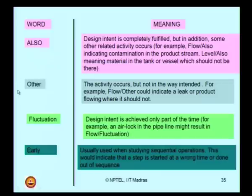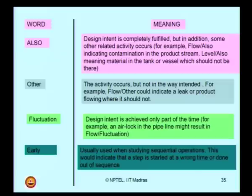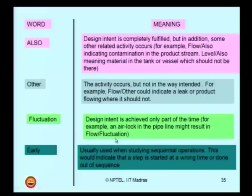There can be a secondary keyword 'other' — the activity occurs, but the way in which it occurs is not intended. For example, 'flow other' could indicate a leak or a product flowing where it should not flow — liquid A is not flowing through the pipe segment, but some other liquid B is flowing. You can also have the keyword 'fluctuation' — the design intent is achieved only part of the time because there is a fluctuation. The fluctuation can be in pressure or in flow, resulting for example from an air lock in the pipe.